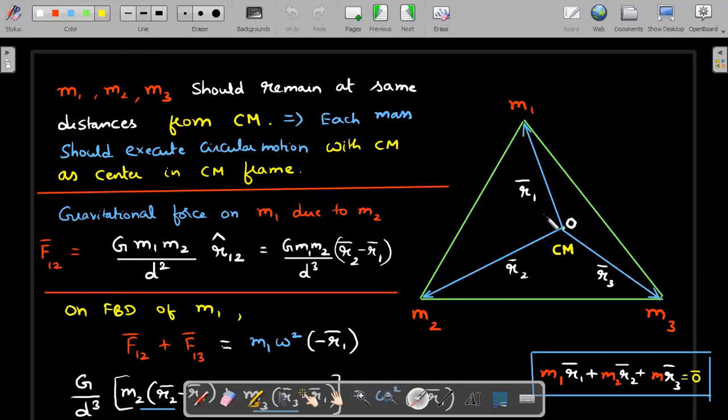So M1 should execute a circular motion of radius R1 with O as center. For that uniform circular motion, it requires a centripetal force. That centripetal force should come from the gravitational force from the other two. So in order to write that equation, first let's investigate what is the force on M1 due to M2.